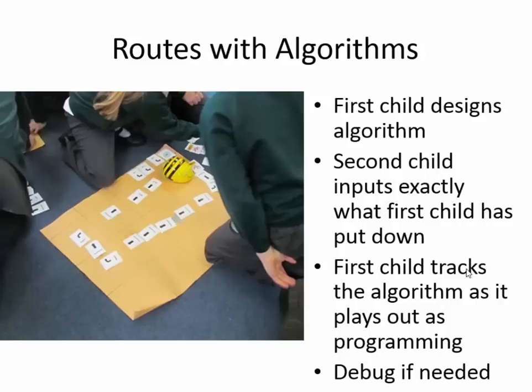We used algorithm cards with a good structure. Children worked in pairs or threes, mostly pairs. The first child would design an algorithm to go from one place to another, then the second child would input exactly the cards that were put down. In early days, children would leave out cards like the go card or clear card but still press those buttons, so we watched for that. It was also really helpful to get the first child to put their finger on the card being executed by Bee-Bot - so as Bee-Bot turned right, the child pointed to 'turn right' in their algorithm. This made spotting errors much easier.